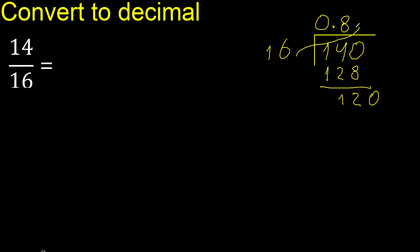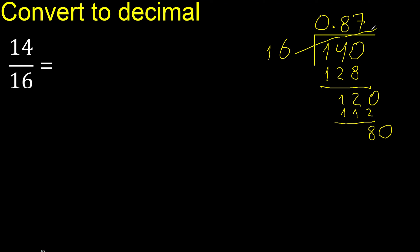16 multiplied by which number? Multiplied by 8 is greater. Multiplied by 7 is 112. Subtract — the result is 8. Always complete with 0: bring down 80. 16 multiplied by which number? Multiplied by 5 is exactly 80.